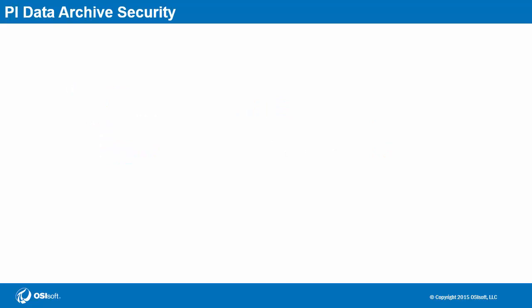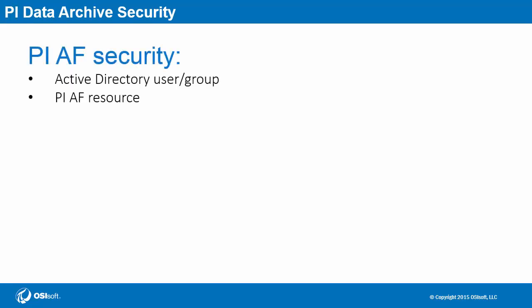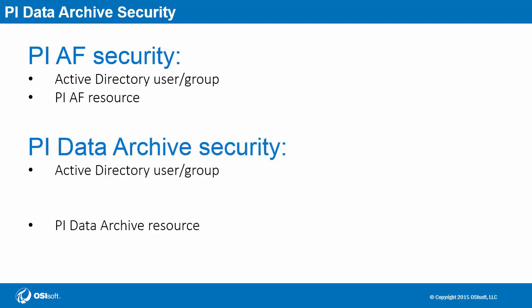Now let's move over to resources inside the PI data archive. Like security for the PI AF server, you need to take note of the specific Active Directory users or groups and the resource, whether it's to read PI point values or to change settings in the tuning parameters. But there are two distinct steps in between. The first is a PI mapping or PI trust. The second is a PI identity. Think of the first as a mechanism for authenticating who you say you are, while the second assists with authorizing what resources you have access to.